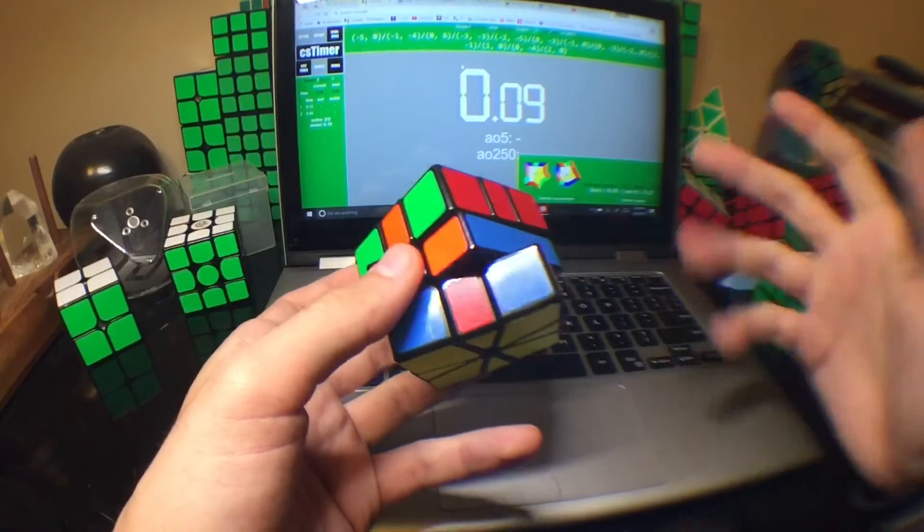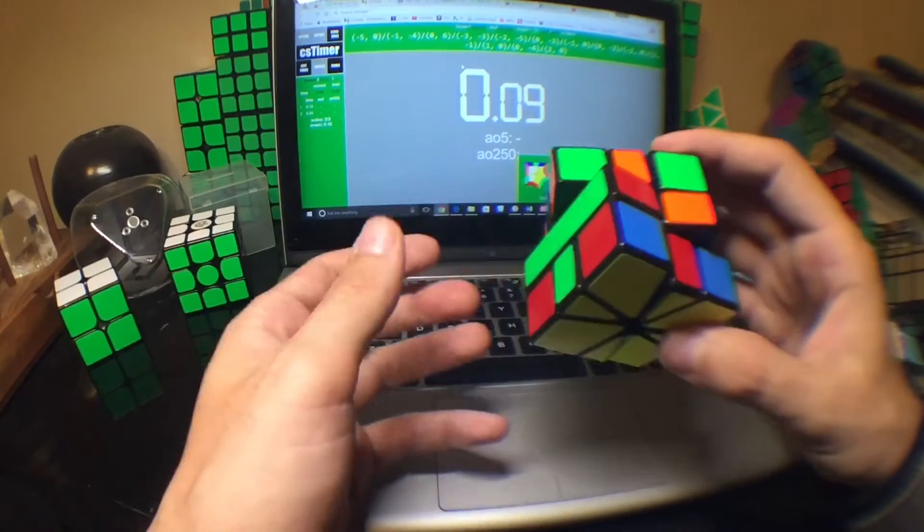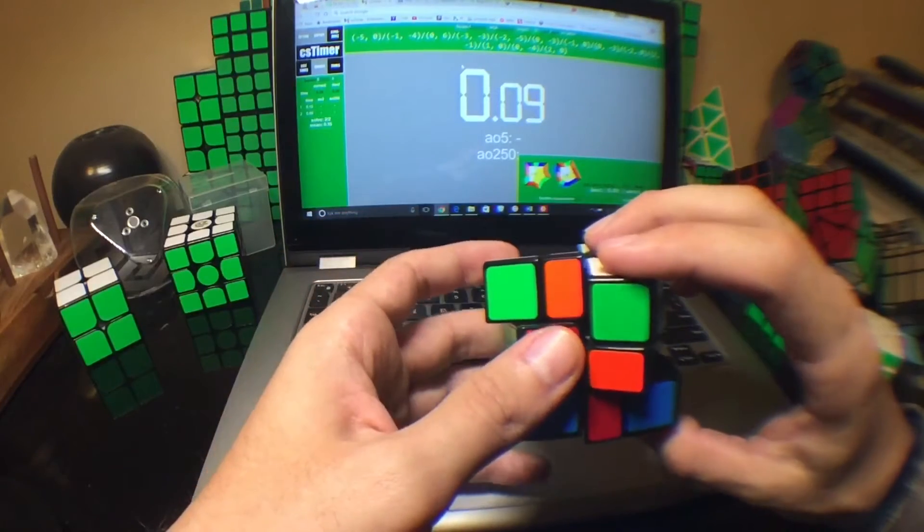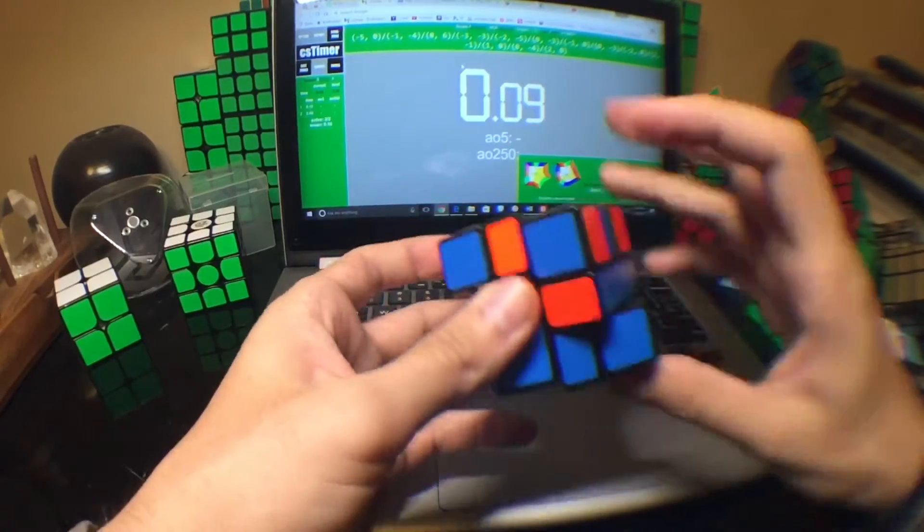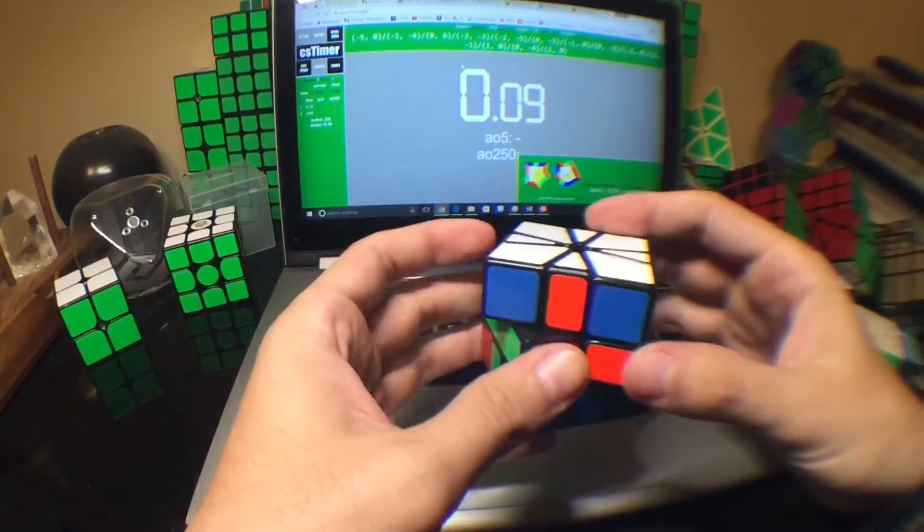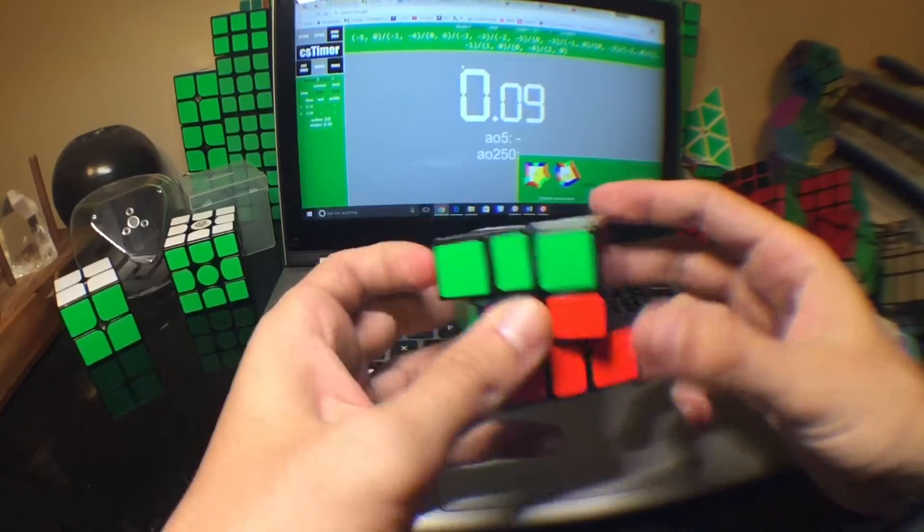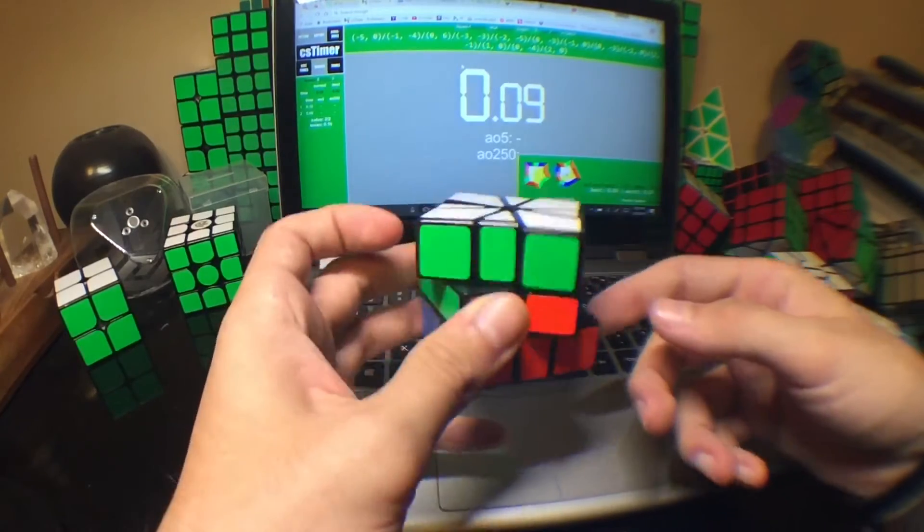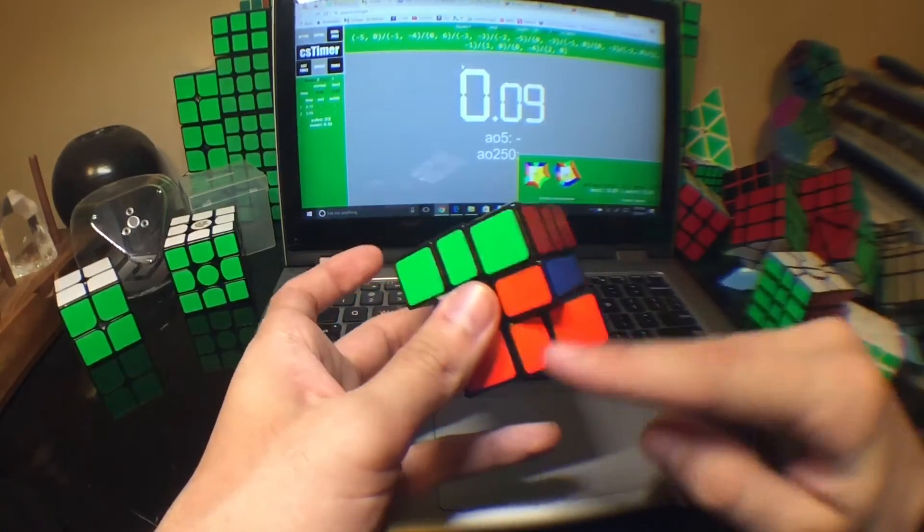I also don't know the U-perm U-perm algorithms, but I think I can do this pretty much just as fast as I would be able to do those. I would do opposite-opposite like that with the solved pieces on either side, doesn't really matter, and then I would move immediately into adjacent-adjacent.